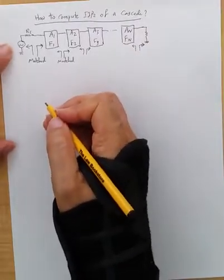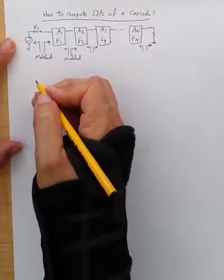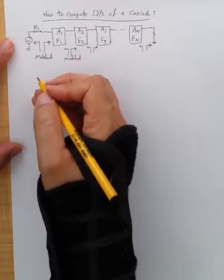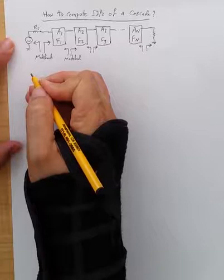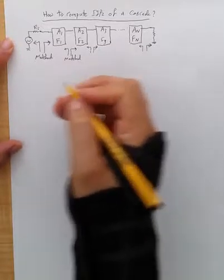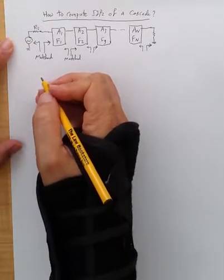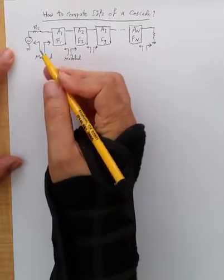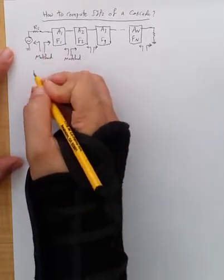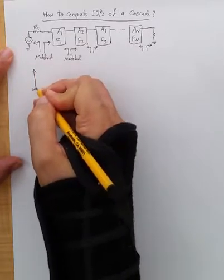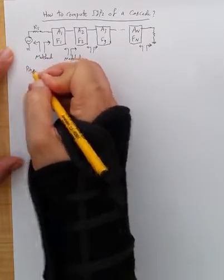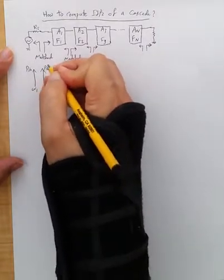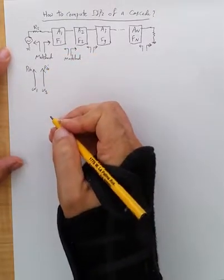Now, we know in order to examine the overall IIP2, we know that the second order intermod components, IM2, appears when we apply two-tone test at the input of the first stage. So let's say we apply two tones at frequencies omega 1 with power Pn and tone omega 2 with power Pn at the input of the first stage.